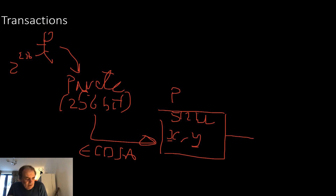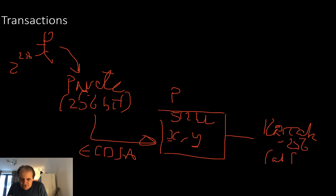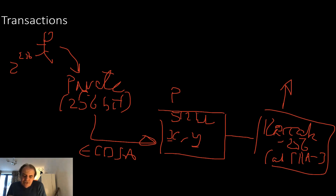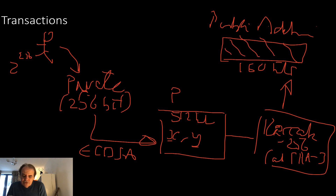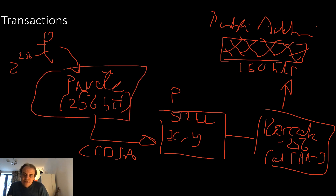We then put the public key through Keccak-256, otherwise known as SHA-3. This produces a 256-bit hash, but we trim it down so that we only take the lower 160 bits of the hash — and this becomes the public address. When someone wants to send you some Ethereum, they use this 160-bit address. We use our private key to sign transactions and our public address to identify us.